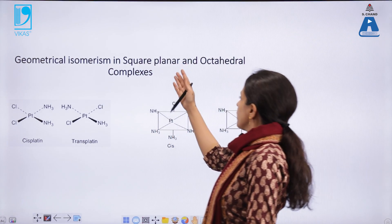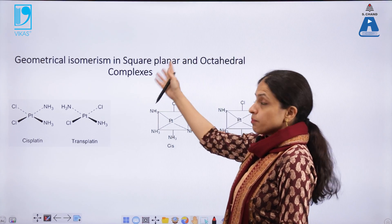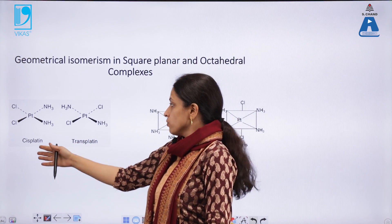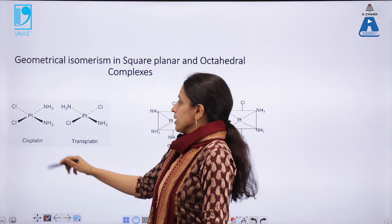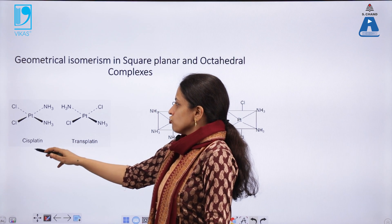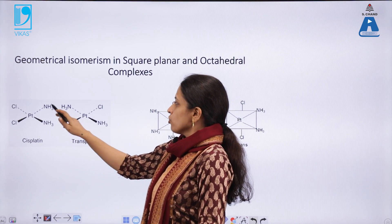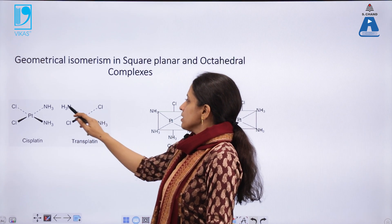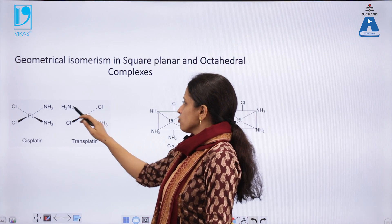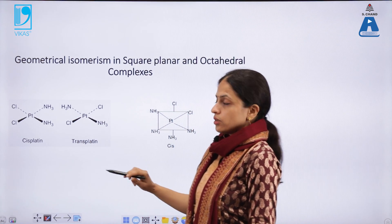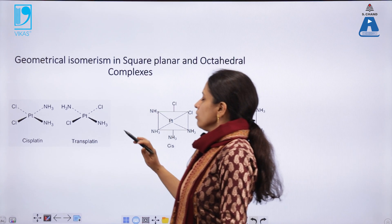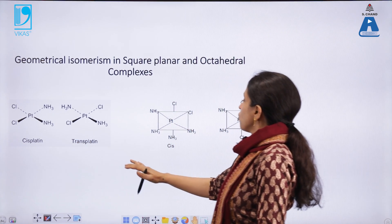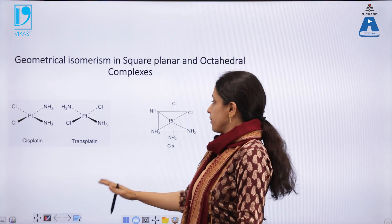Geometrical isomerism in square planar complexes can be exemplified by the anticancer drug cisplatin, where the two similar groups are adjacent to each other. In transplatin, both the NH3 groups are opposite to each other. This is how geometrical isomerism is shown in square planar complexes.